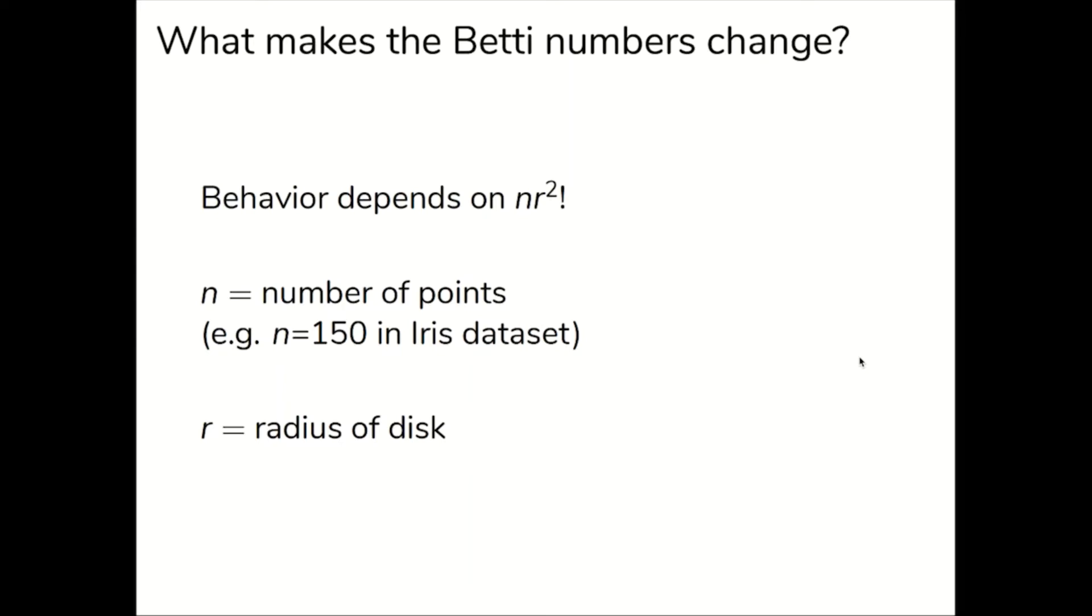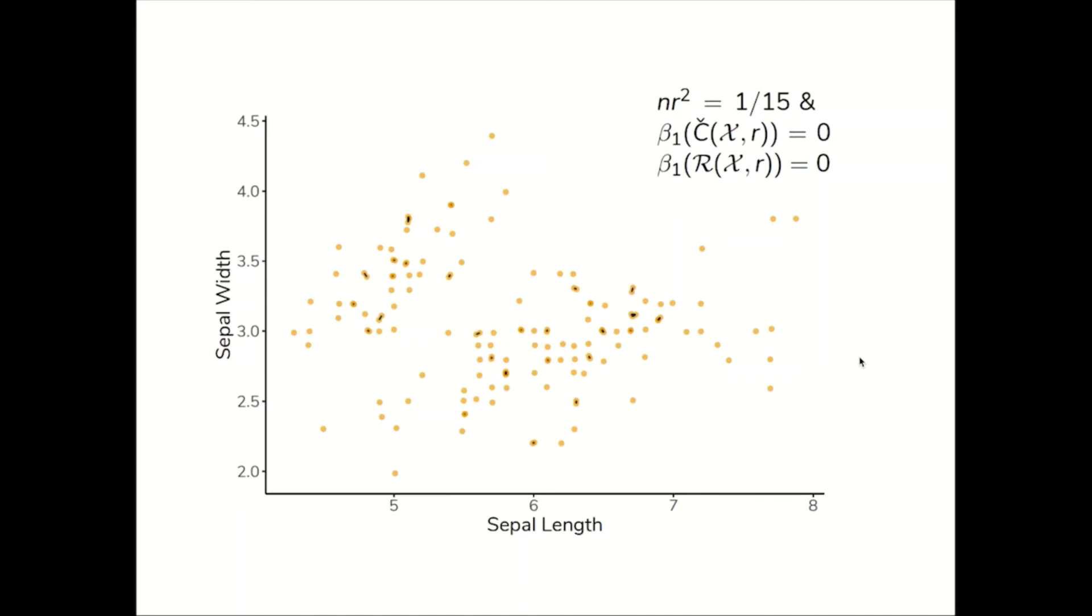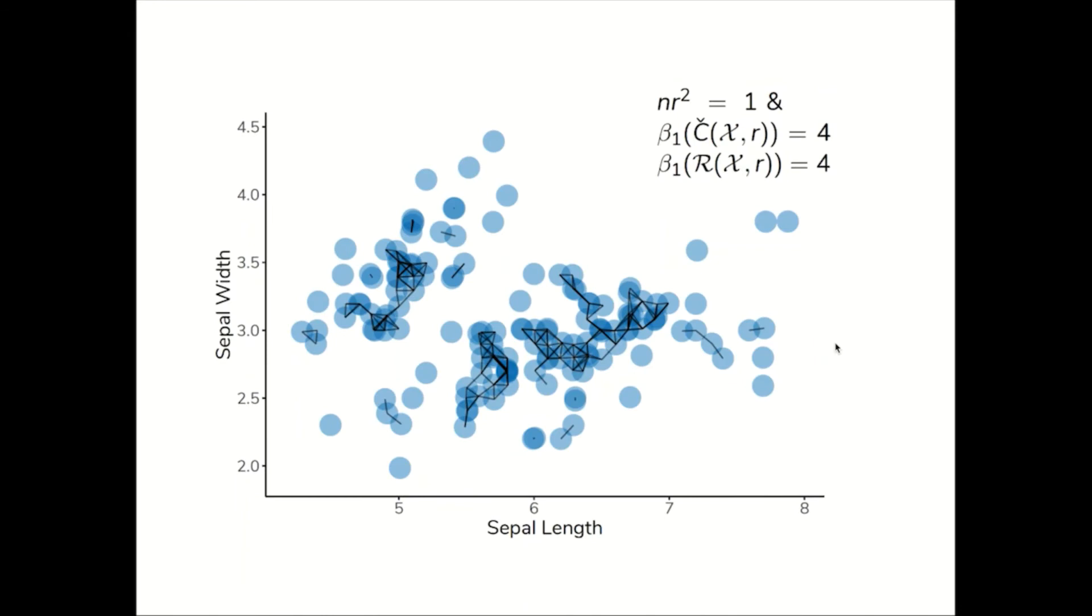With this being said, let's take a closer look at the case when nr² is small. When nr² is 1 over 15, you can see there's some very minor levels of connectivity happening in both the Čech of the union of disks and of the Vietoris-Rips complex, which can be built from the black edges connecting the disks. But the first Betti numbers are zero. The Čech and Vietoris-Rips complexes are too sparse for Betti one.